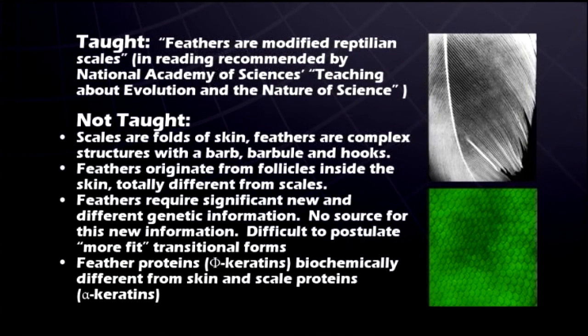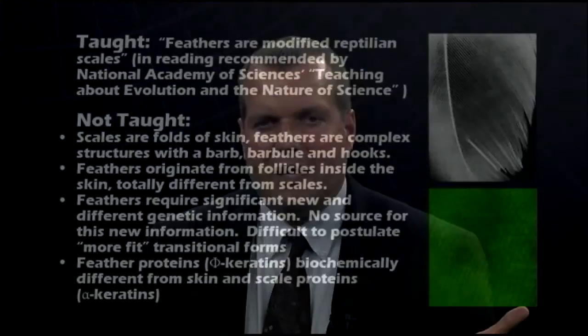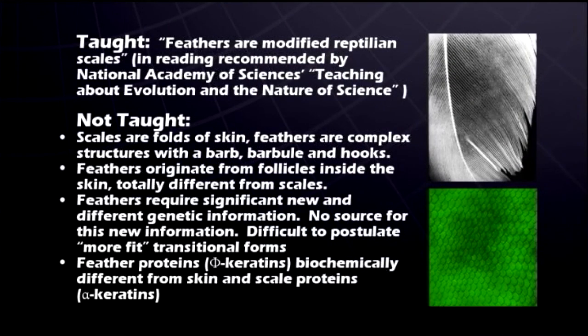Feathers originate from follicles inside the skin — totally different from the way scales originate. So it's not just modifying or fraying a scale to become a feather; even the very way that scales and feathers originate are completely different. Feathers require significant new and different genetic information. As we've shown, there's no source for this new information, and it's very difficult to postulate transitional forms. If an animal designed for scales is somehow trying to turn that scale into a feather, making every intermediate have a huge survival advantage — even without getting into the biochemical impossibilities — that alone is extremely difficult to postulate.